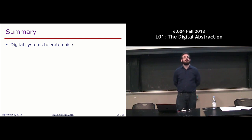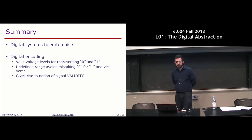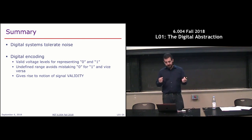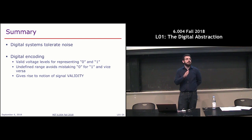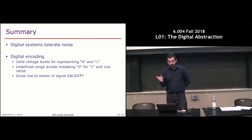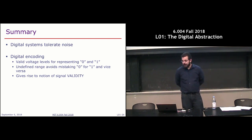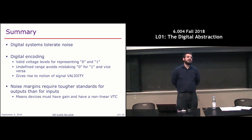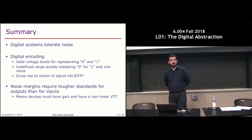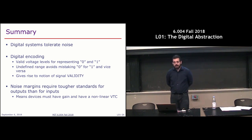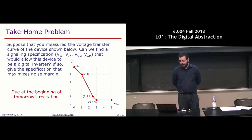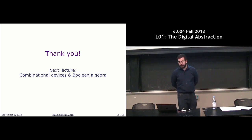In summary, the key distinguishing feature of digital systems over analog systems is that they tolerate noise. To get this noise tolerance, we encode digital values using ranges of continuous quantities — in our case, voltages. We need to set two valid voltage levels for representing zero and one, with some undefined range in the middle, giving rise to the notion of valid and invalid digital inputs. We also need separate thresholds for inputs and outputs so we have noise margins and digital systems that cancel noise. That's it for today. Here's a take-home problem printed on the back of your handout. Next lecture we'll start talking about combinational devices.